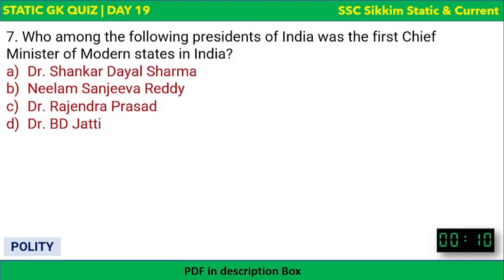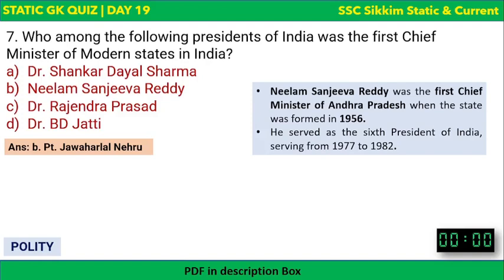Next question: Who among the following presidents of India was the first Chief Minister of a modern state in India? The correct answer is Neelam Sanjeeva Reddy. He was the first Chief Minister of Andhra Pradesh when the state was formed in 1956, and he later served as the sixth President of India from 1977 to 1982.